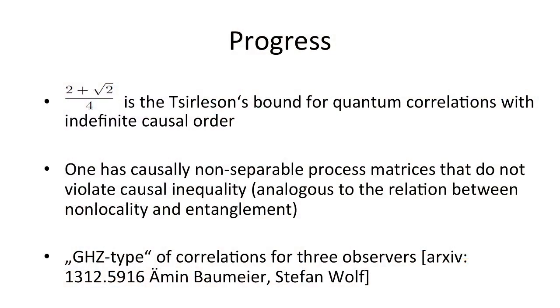This slide is for people who have heard this talk before, mostly at quantum information conferences. This 2 times square root 2 actually is the Tsirelson bound for quantum correlations with indefinite causal order. You can prove that you cannot go beyond that. You can also prove that one has causally non-separable process matrices, matrices that cannot be written as a classical mixture of causally ordered processes, but they do not violate causal inequalities. It is very analogous to the situation between non-locality and entanglement in quantum information where you have states that are provably entangled but do not violate Bell's inequalities. Recently there was progress by people in the group of Časlav Brukner, Amin Baumeler and Časlav Brukner. They proved that there is a kind of GHZ type of correlations for three observers within this framework.